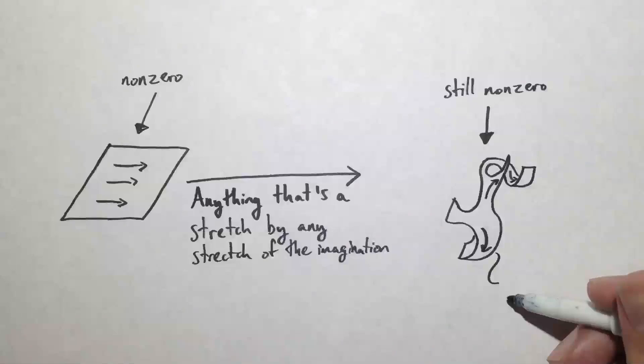This means that we can't have a vector field on the sphere which is both continuous and everywhere non-zero, which is exactly the Hairy Ball Theorem.